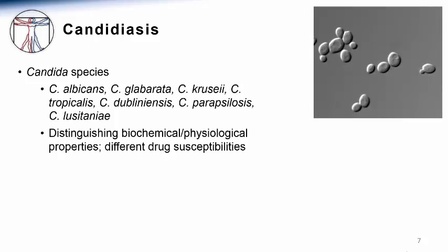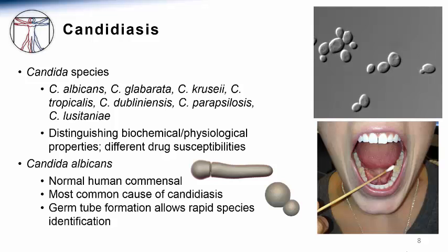Each of these species can be readily identified in the clinical microbiology lab based on different morphological and biochemical features. Candida albicans is the Candida species most commonly causing human candidiasis. It is a normal inhabitant of human mucosal surfaces, and up to 25% of people can be colonized with this fungus at any point in time. Candida albicans can be readily and quickly identified in the clinical microbiology laboratory by its ability to form germ tubes or filamentous projections arising from the rounder yeast-like cells, as demonstrated in the cartoon image on this slide. This transition occurs very quickly under appropriate inducing conditions, potentially allowing a trained microbiology technologist to rapidly assign a Candida species designation to an individual isolate.